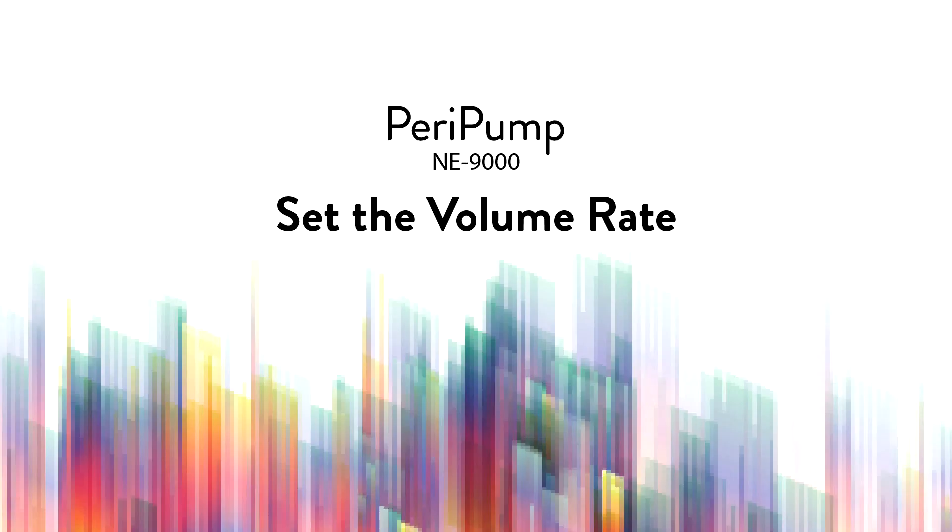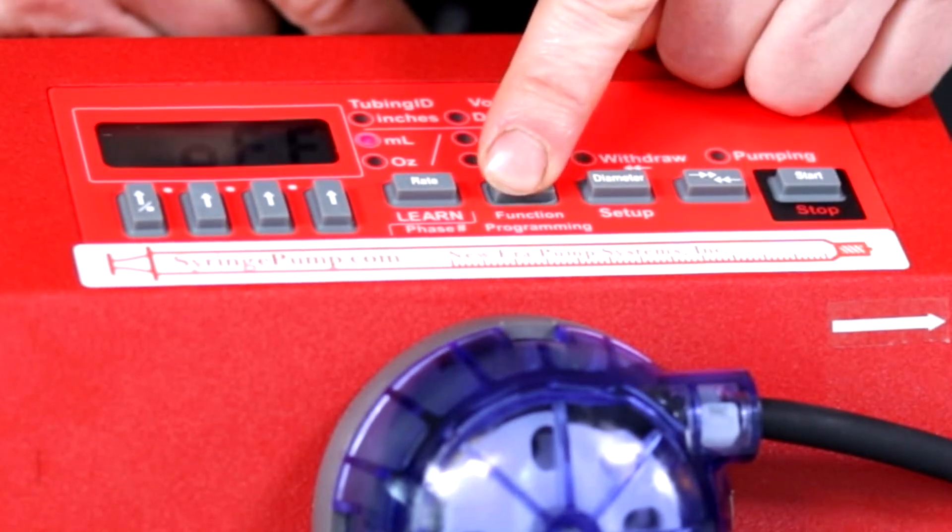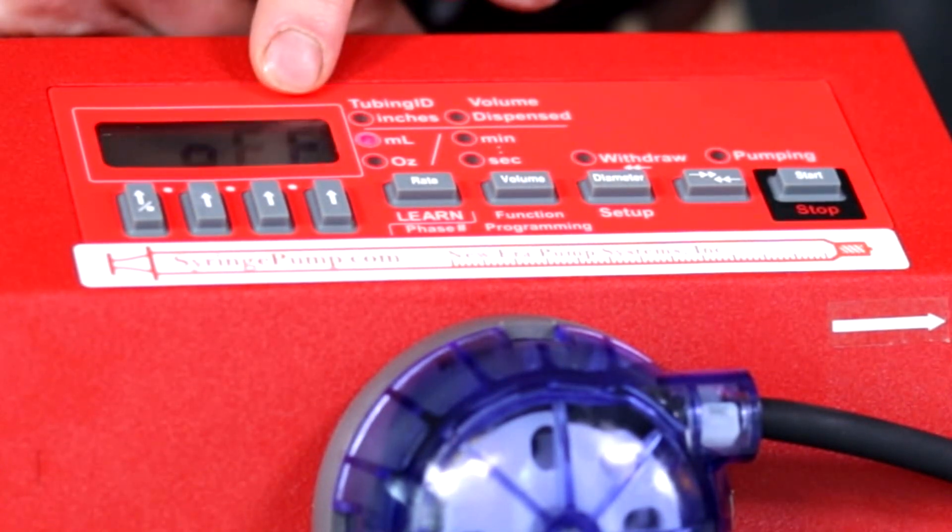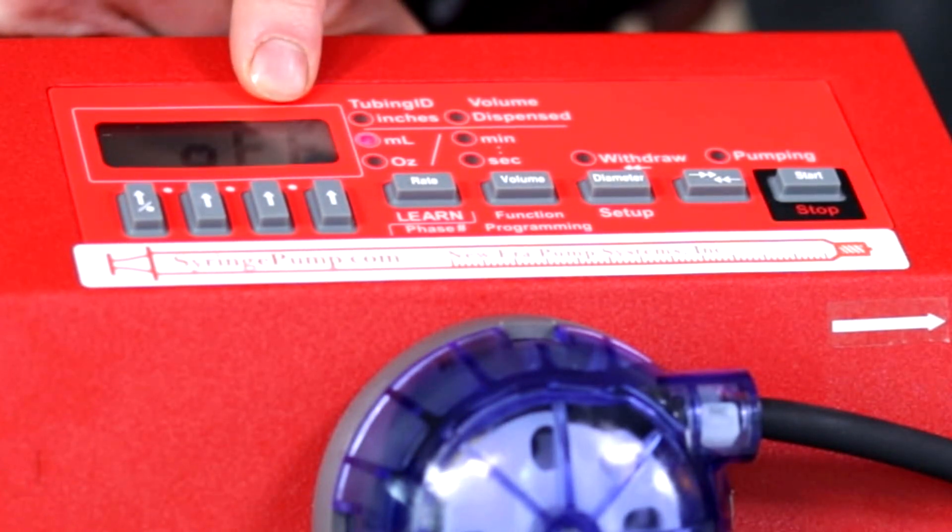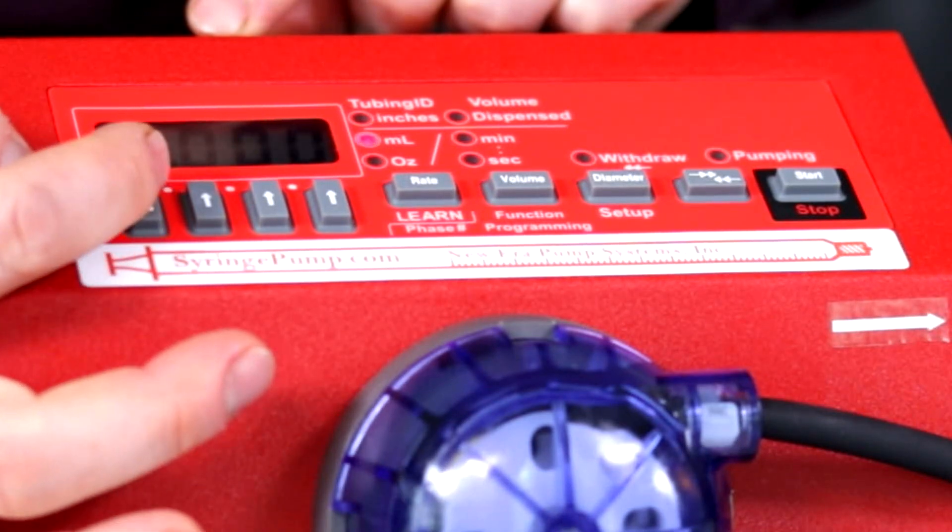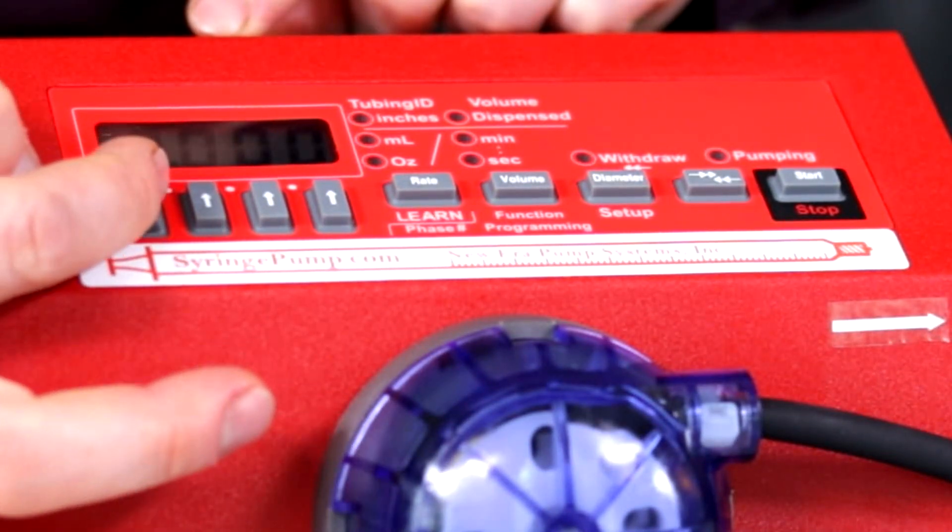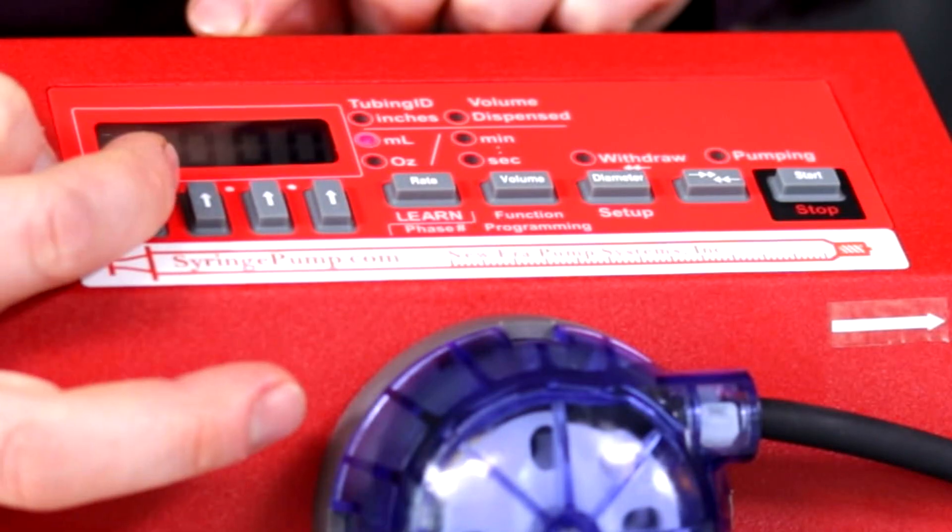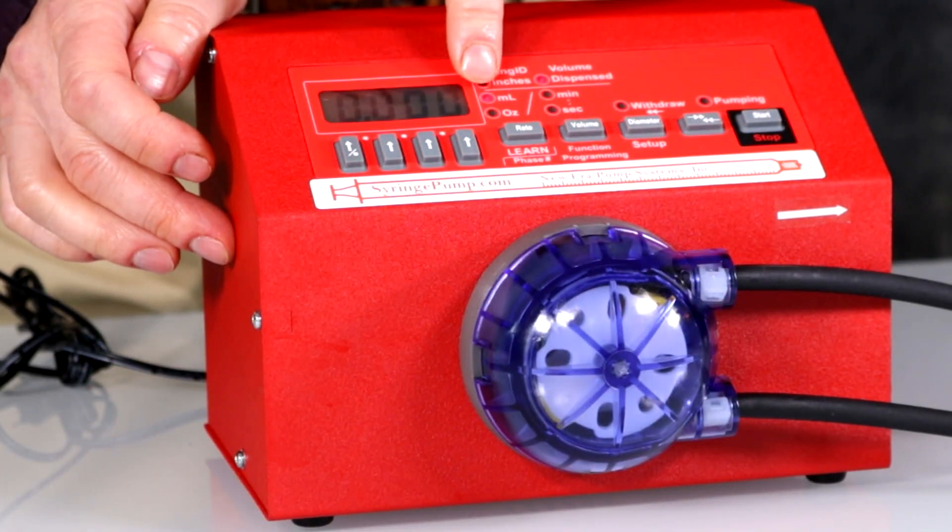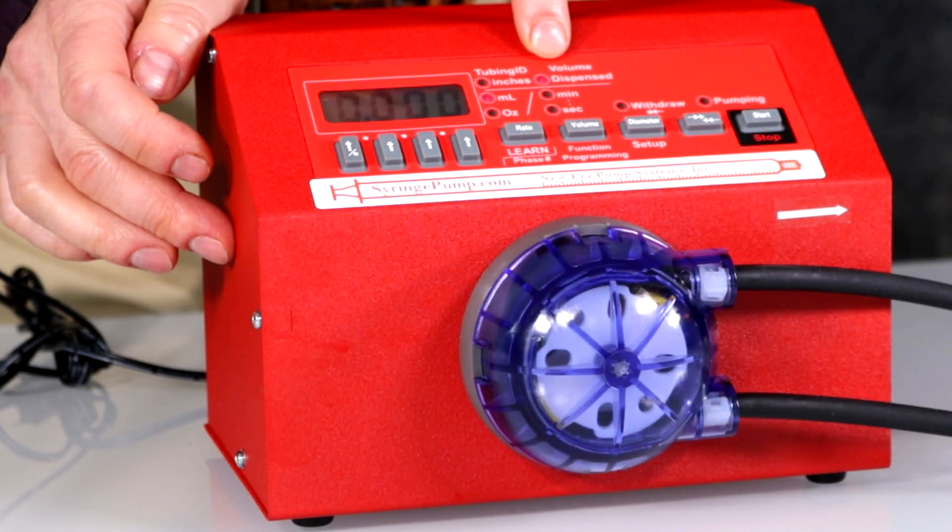Set volume rate. Press the volume key to show the volume target. Off indicates continuous pumping. Press the volume keys to set a volume target. Press the volume key again to show the units dispensed.